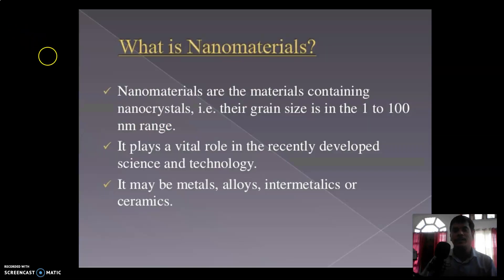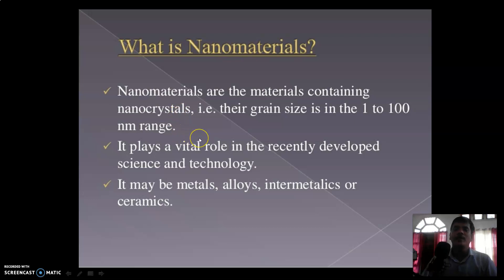First of all, what are nanomaterials? Nanomaterials are materials containing nanocrystals — that is, their grain size is in the 1 to 100 nanometer range. They play a vital role in recently developed science and technology. Nanomaterials may be metals, alloys, intermetallics, or ceramics.